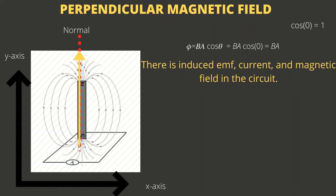The angle between the magnetic field vector — the yellow arrow — and the normal — the dotted red line — to the loop of wire is the angle theta that we use in the magnetic flux equation. When we say something is a vector, we mean it has magnitude and direction. Since the angle theta is zero degrees, and the cosine of zero is one, the magnetic flux is simply calculated as the product of the magnetic field B and the area of the wire loop A.